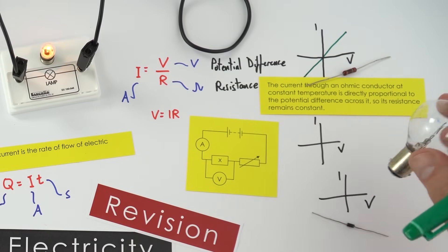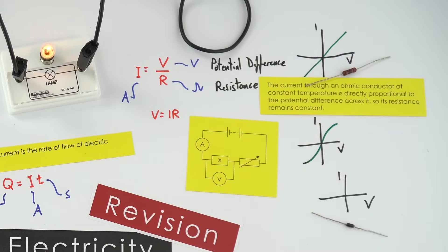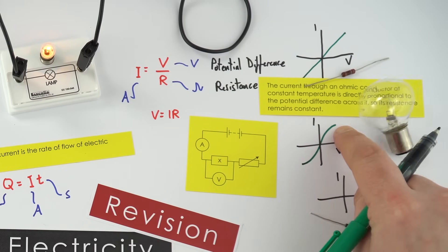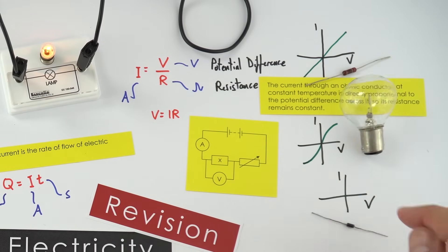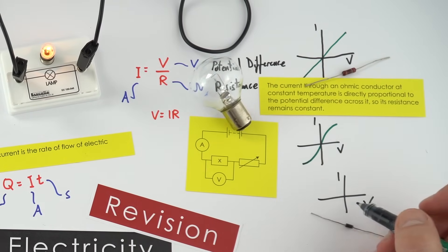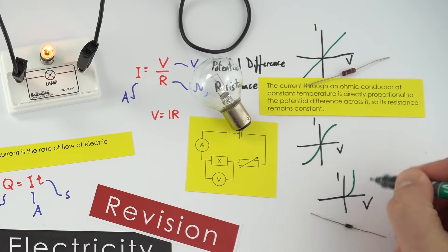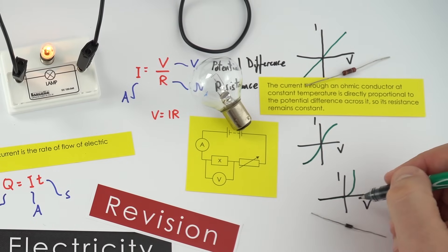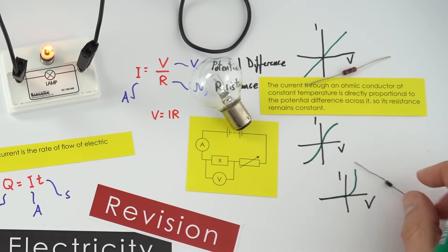A filament lamp is not an ohmic conductor — we get a curve, because as it gets hotter and gives out more light, the resistance increases. So a light bulb has a changing resistance. A diode, on the other hand, works like a one-way valve and only lets current flow in one direction. If you have a negative potential difference the current is zero, but with a high enough positive potential difference lots of current can flow, allowing us to control the direction of current in a circuit.